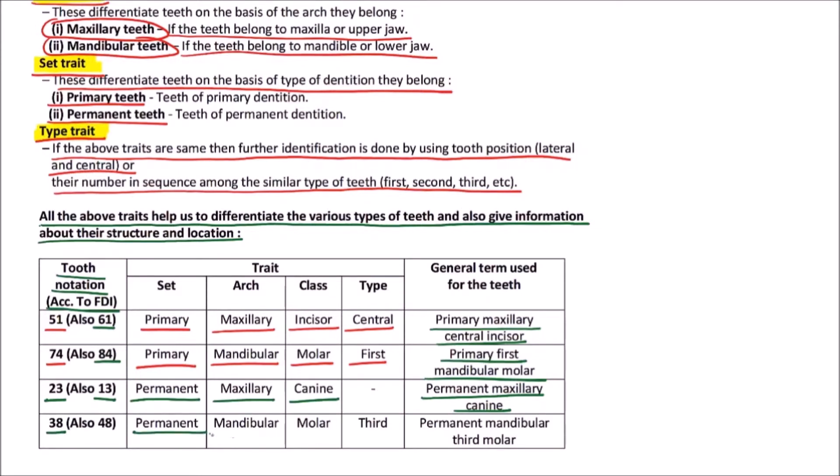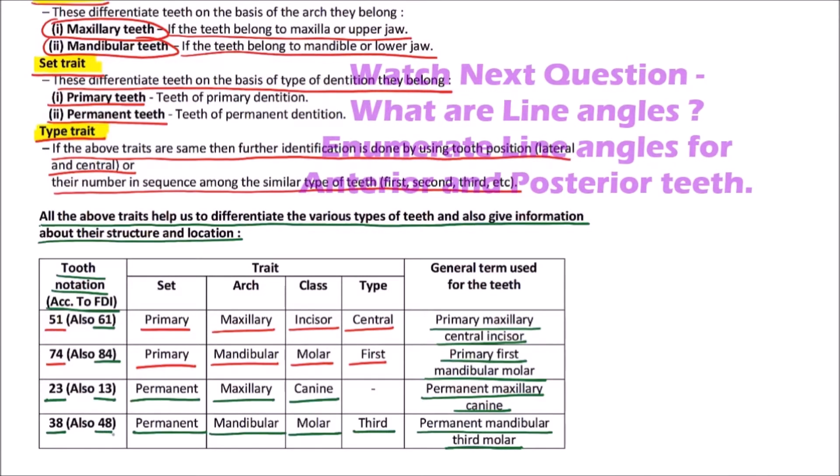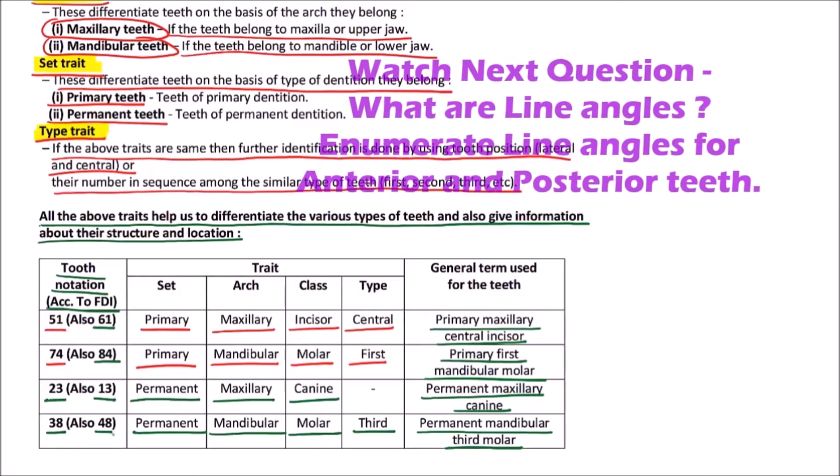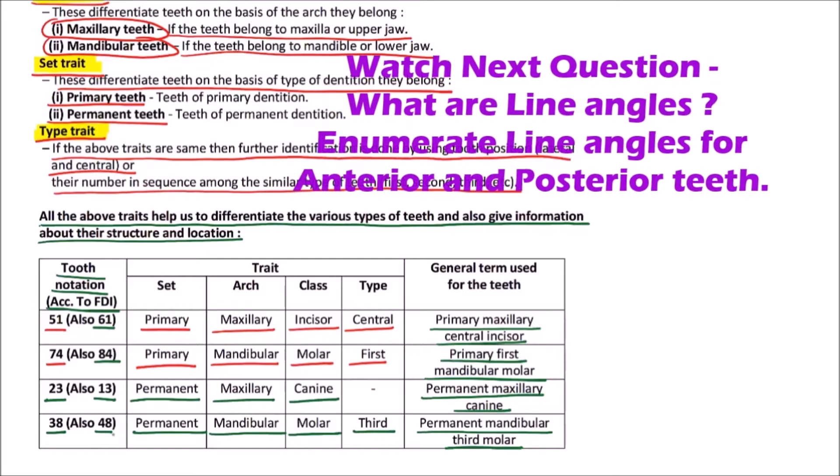Then 38: permanent set, mandibular arch, molar is the class, and type is third. So it is commonly termed as permanent mandibular third molar. The same is applicable to 48, which is present at the same position but in opposite quadrant of the same arch.